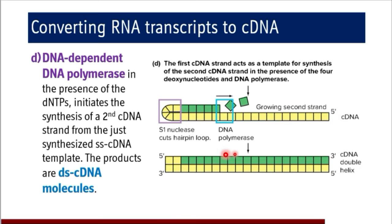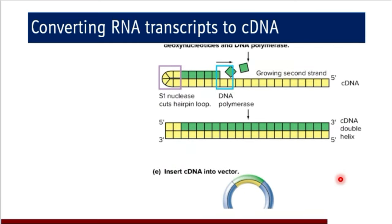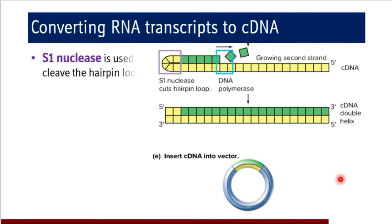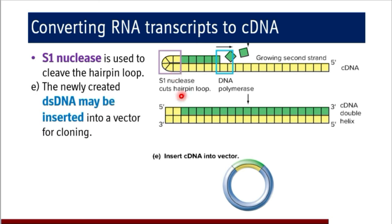S1 nuclease enzyme has to cleave the hairpin loop so that a properly organized double helix of the complementary DNA can be synthesized. The hairpin loop which acted as a primer needs to be removed by S1 nuclease. This completed complementary DNA will then be inserted into a vector for the cloning process.